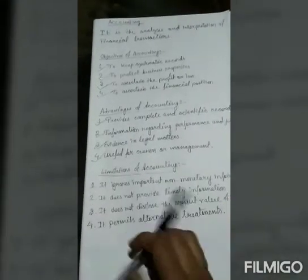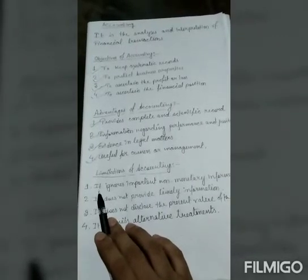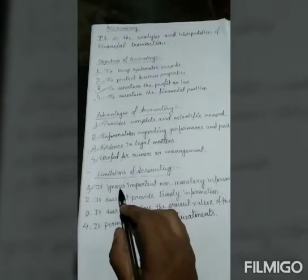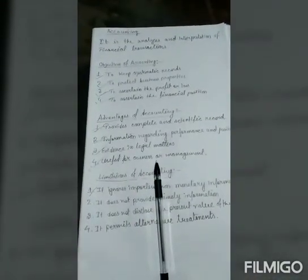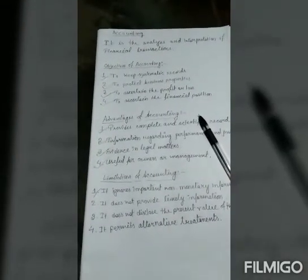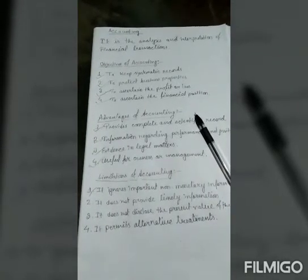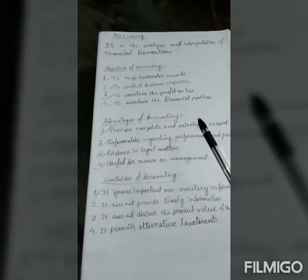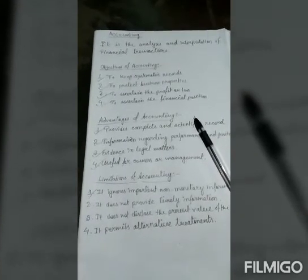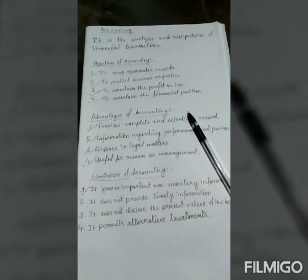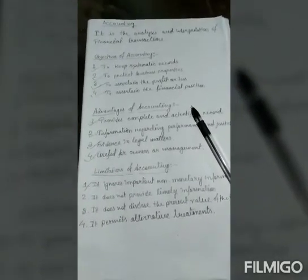Now, the limitations of accounting. So, the first limitation of accounting is it ignores important non-monetary information. Accounting does not consider the transactions of non-monetary in nature, like loyalty and efficiency of the employees, changes in the value of money, technical innovations possessed by the business, etc., which are also important matters. So, any user of accounting information is naturally deprived of vital information which is of non-monetary character.